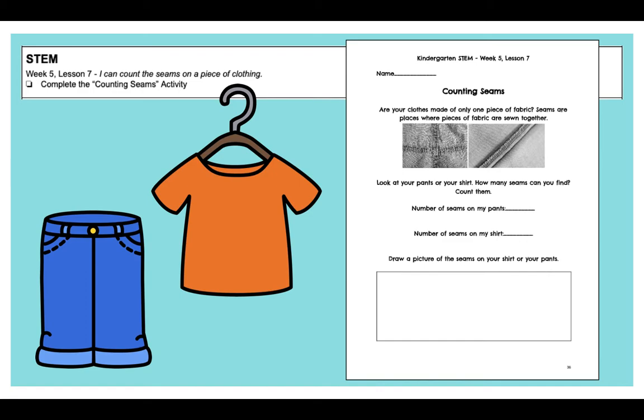Look at your pants or your shirt. How many seams can you find? It wants you to count them and then write the number on those two lines. The number of seams in my pants and the number of seams on my shirt. So remember, friends, a seam is where you can see they sewed two pieces of fabric together, just like those pictures.